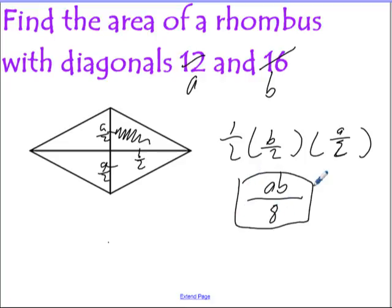But we want to know the area of the whole thing. So all we have to do is take that and multiply it by 4. And if we simplify AB over 8 times 4 or 4 over 1, we get 4AB over 8, which can simplify or reduce to A times B divided by 2.